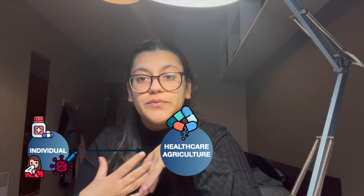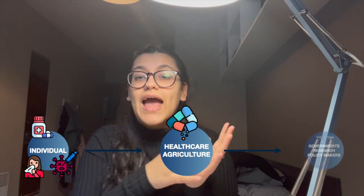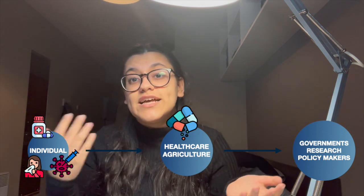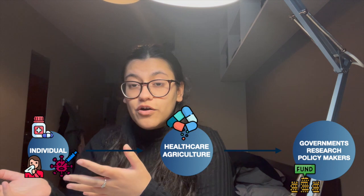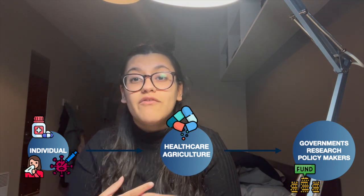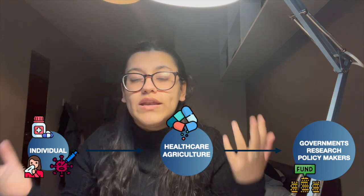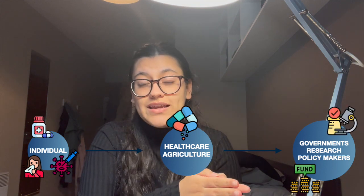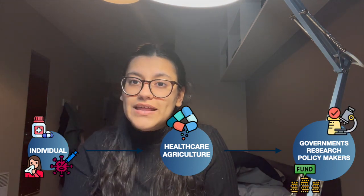At the government and policy level, it's really important for governments to increase funding for antibiotic research. The last completely new antibiotic was discovered in the 1980s, making new investment critical. Big pharma must also invest in creating new antibiotics. And as always in ethics questions, don't forget to mention the four pillars of medical ethics to take your answer to the next level.